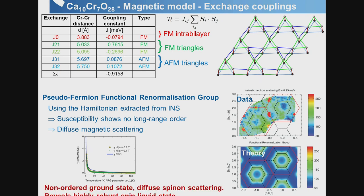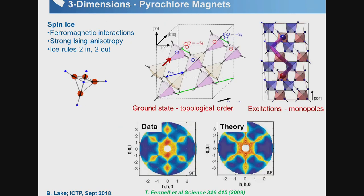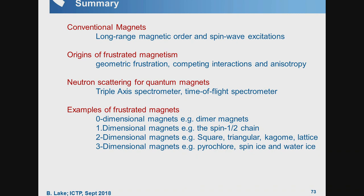This was an example where the material was found before the model. To summarize: conventional magnets have long-range order and spin wave excitations; unconventional frustrated magnets do not have long-range order and can have spinon excitations arising from geometric frustration, competing interactions, or anisotropy. These can be measured using neutron scattering — either triple axis spectrometers or time-of-flight spectrometers — enabling many examples of quantitative comparison between theory and experiment. Thank you.